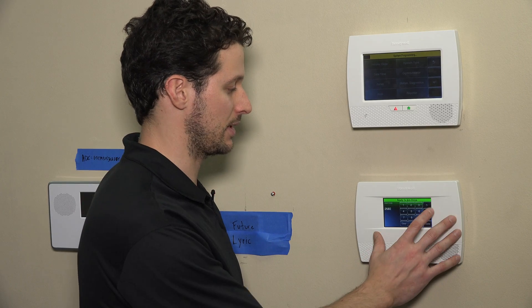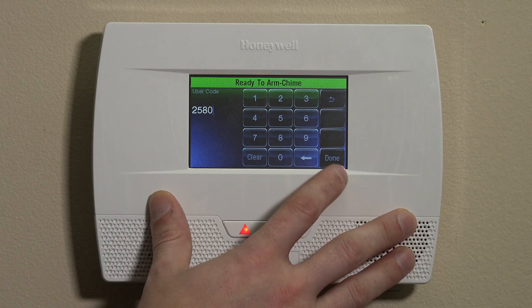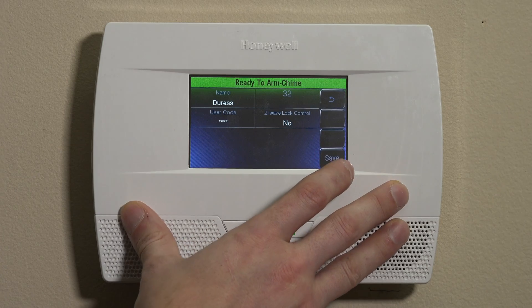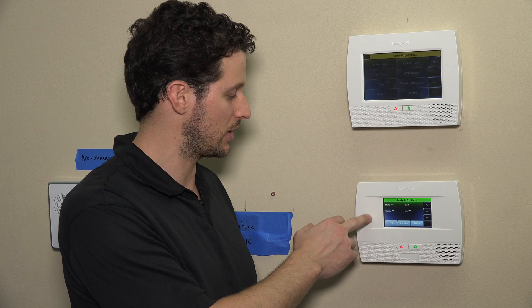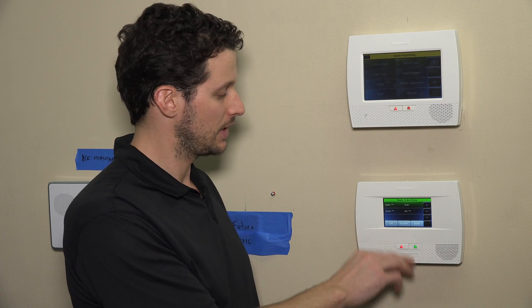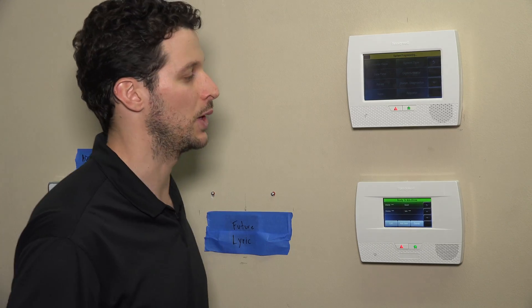The duress code is really only useful when you have central station monitoring. We offer some no-contract plans on our website, AlarmGrid.com, so you can check those out. We'll keep 2580 in there for now and save it. So now we've changed our master code, changed our duress code, set up a subuser, and gone through how the guest code works. In most cases it may not be very useful, but it can be useful in certain situations with people you want to have access at certain times.